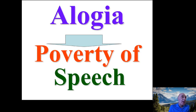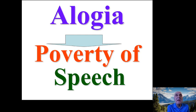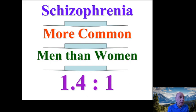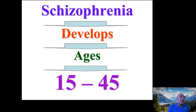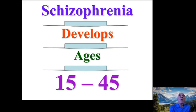Another negative symptom is alogia, or poverty of speech — they cannot speak as fluently as healthy people. Schizophrenia is more common in men than women with a ratio of 1.4 to 1, meaning for every 14 men with schizophrenia there are 10 women. Schizophrenia usually develops between the ages of 15 and 45, and most cases are seen within this age range.